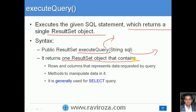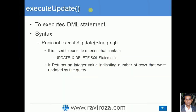The ResultSet returned is an individual object which is a combination of rows and columns, like a matrix from a table. It has various methods to manipulate data, and most of the time it is used for selecting data from a table. So this is executeQuery().